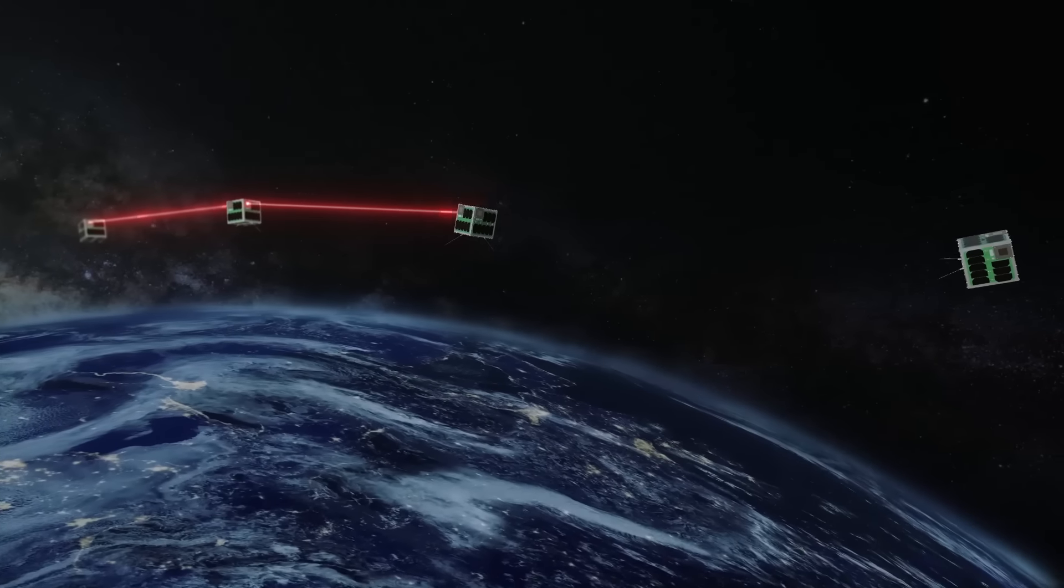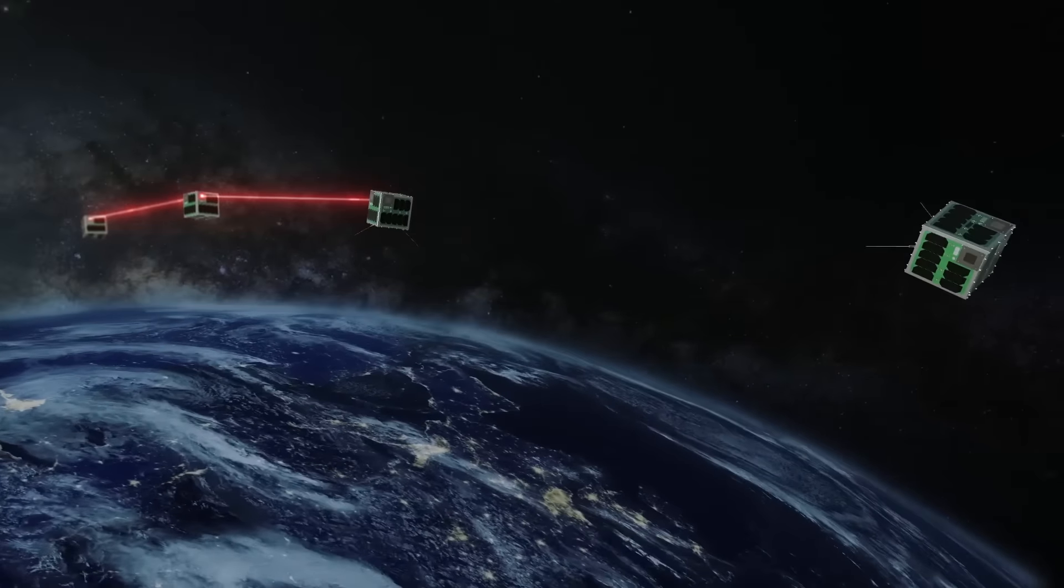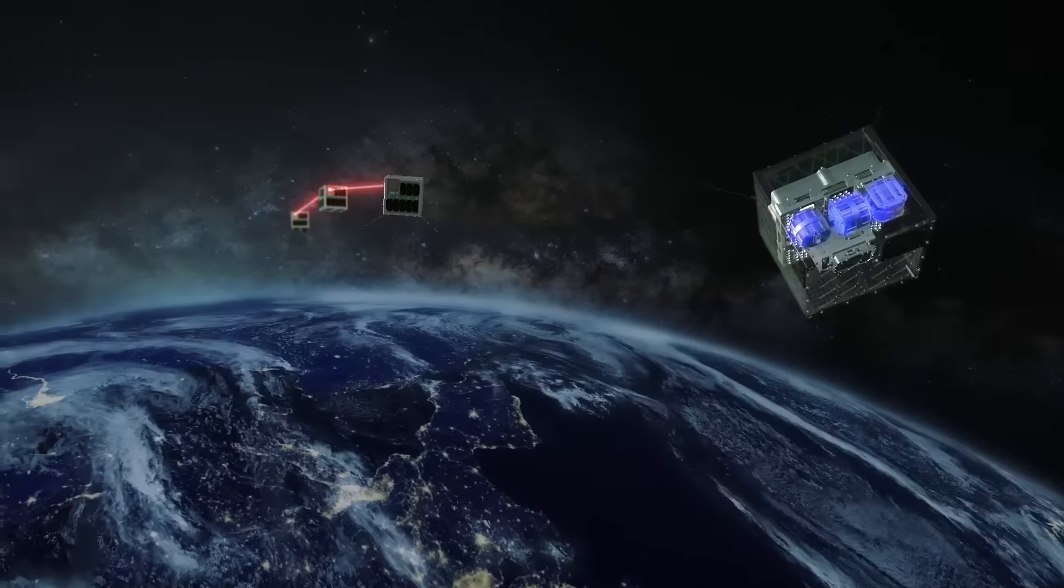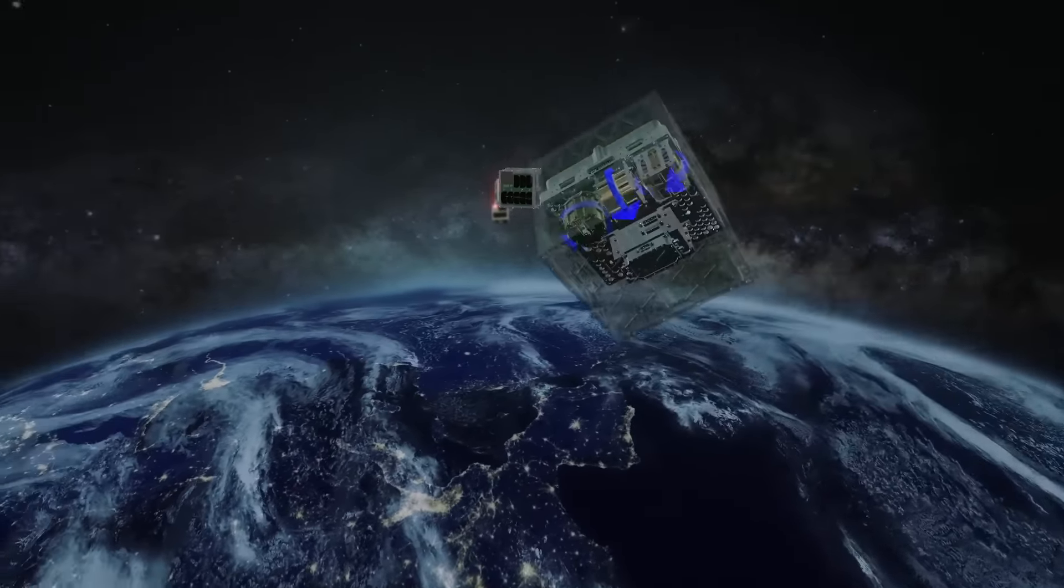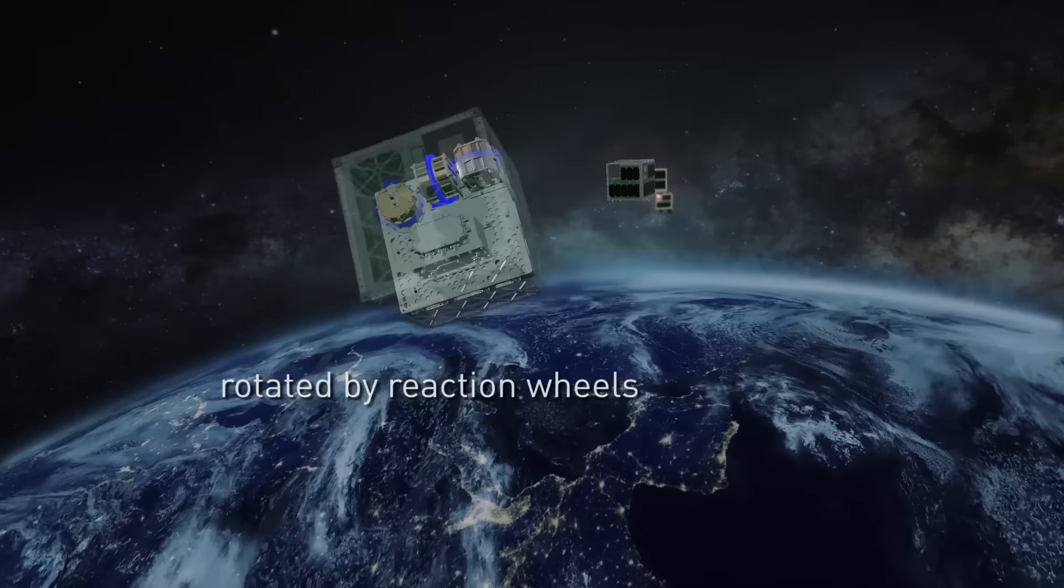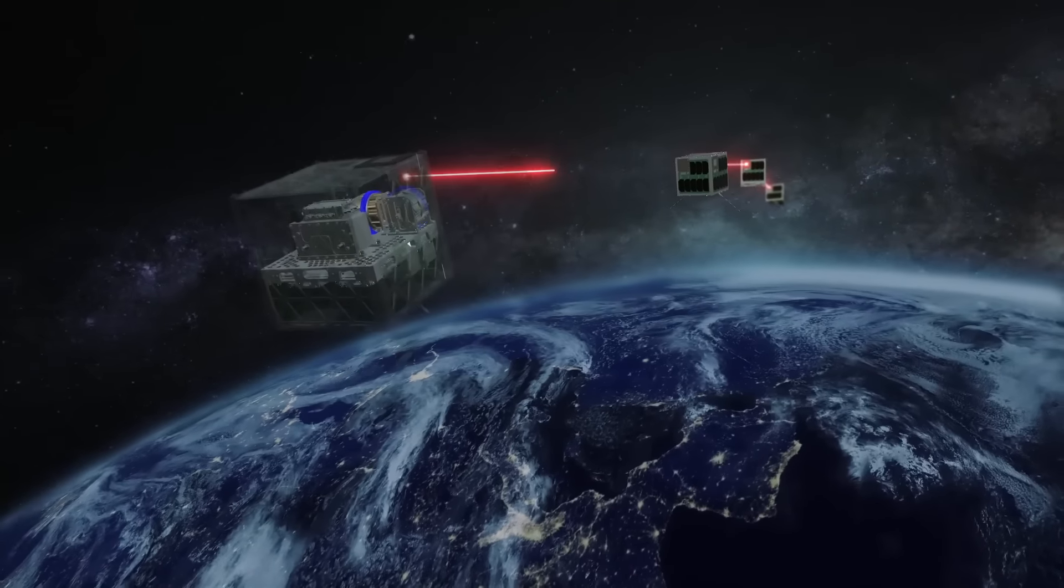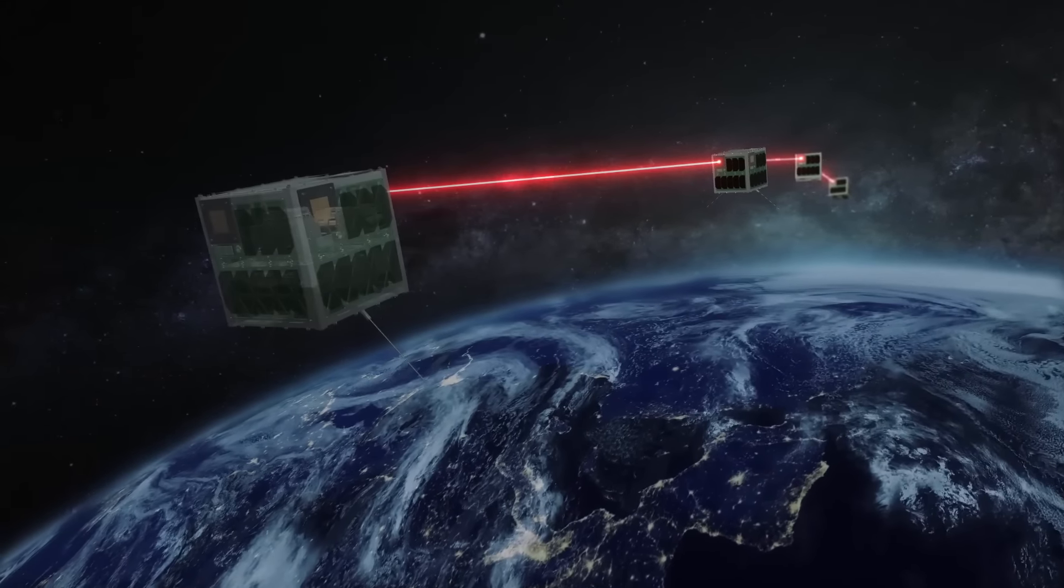Although the satellites are extremely small and do not have a built-in propulsion system, their attitudes can be changed via command from a ground operator. This is done by so-called reaction wheels, acting as an angular momentum exchange device.